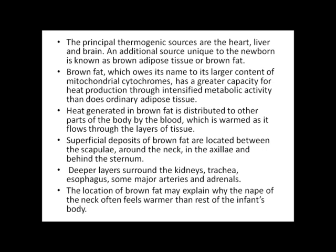A heat source unique to the newborn is brown adipose tissue, or brown fat, which owes its name to a high content of mitochondrial cytochromes and has a larger capacity for heat production through intensified metabolic activity than ordinary adipose tissue. Heat generated in brown fat is distributed to other parts of the body by blood warmed as it flows through layers of tissue. Superficial deposits of brown fat are located between the scapulae, around the neck, in the axilla, and behind the sternum. Deeper layers surround the kidneys, trachea, esophagus, some major arteries, and adrenals. The location of brown fat may explain why the nape of the neck often feels warmer than the rest of the infant's body.